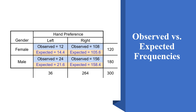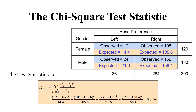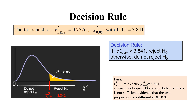To revise the test procedure: first we draw the contingency table of observed frequencies; second, we formulate the null and alternative hypotheses; third, we construct the table of observed and expected frequencies. Fourth, we calculate the test statistic using the formula: sum of (fo minus fe) squared divided by fe, applied to each cell — female left-handed, female right-handed, male left-handed, and male right-handed — then add all values.